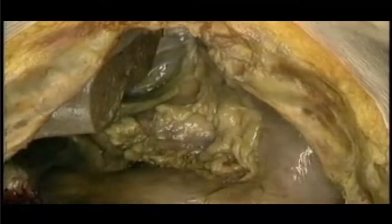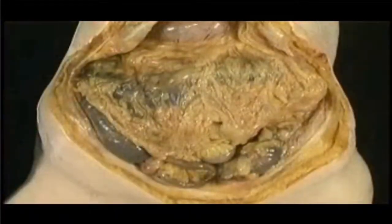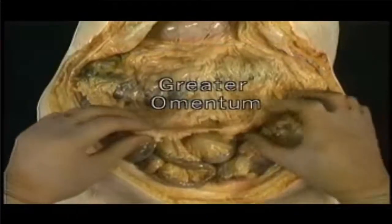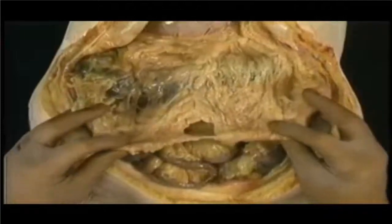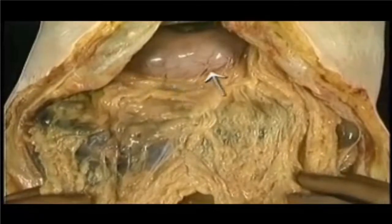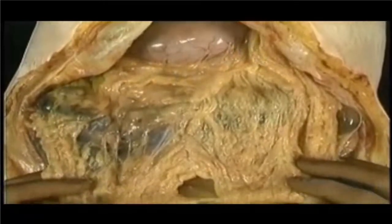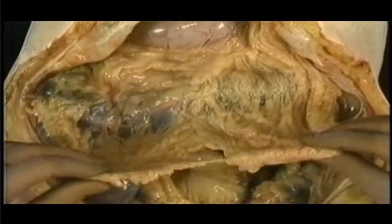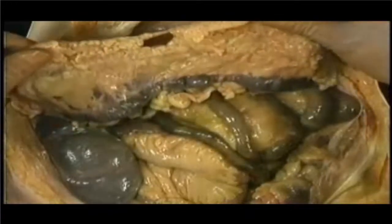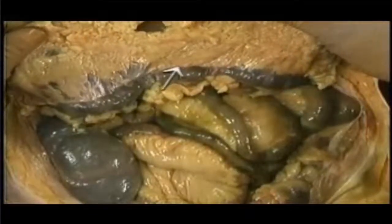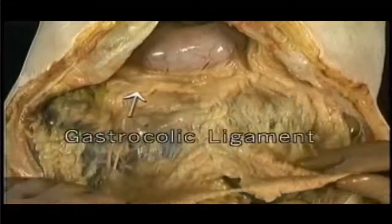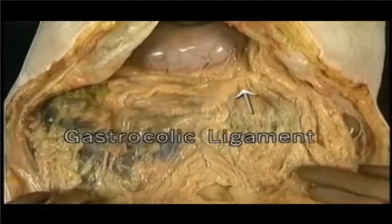To see the greater omentum, we'll go to an earlier stage in the dissection. All this is the greater omentum. We'll pick it up to see its free lower border. Here's part of its attachment to the greater curve of the stomach. Between its peritoneal layers there's a variable amount of fat. On the front, the greater omentum hangs free in front of the coils of small intestine. On the back, it's attached to the front of the transverse colon. The part of the greater omentum between the stomach and the transverse colon is called the gastrocolic ligament.